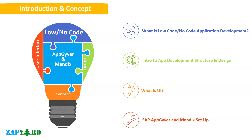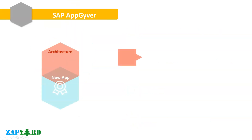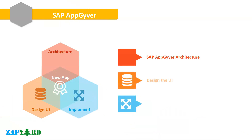We will try to understand what the user interface allows the users to see and do. Why should we learn and use Mendix and App Giver? We will also do the step-by-step setup of App Giver. Once we have the App Giver setup done, we will learn and explore the architecture of App Giver. We will make our hands dirty in this innovative tool, which is a lifesaver for many developers. We will create our first app using App Giver and design a UI and implement the business logic.